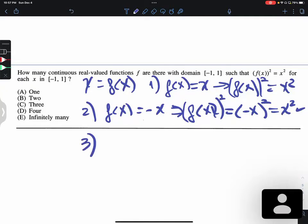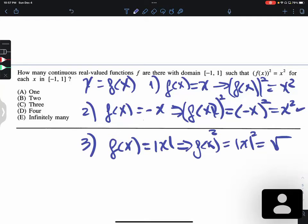Now the third, we do the absolute value. If f of x equals absolute value of x, then f of x squared is the absolute value of x squared, which is x squared. This represents the distance to zero. When we square it, we're gonna have x squared.